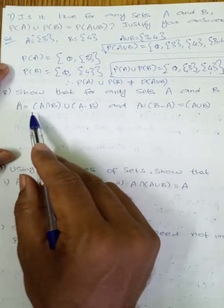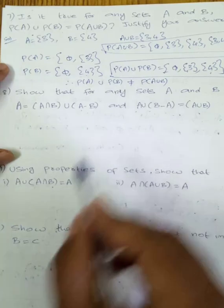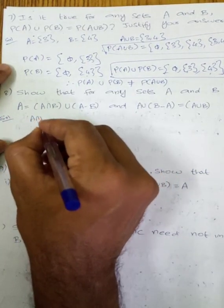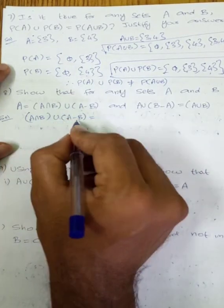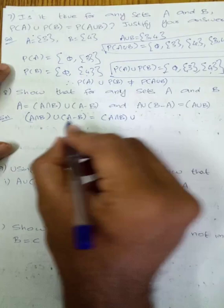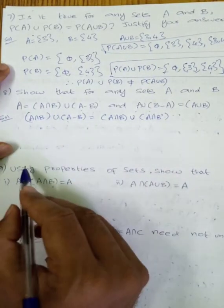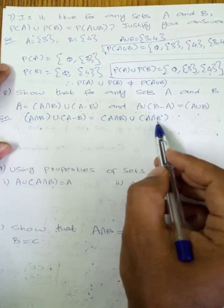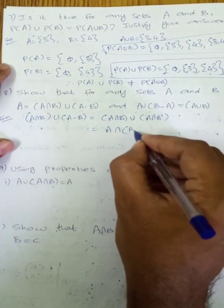Show that for any sets A and B: A equals (A intersection B) union (A minus B), and (A union B) minus A equals A union B. Now, elements present in A but not in B is A intersection B complement.